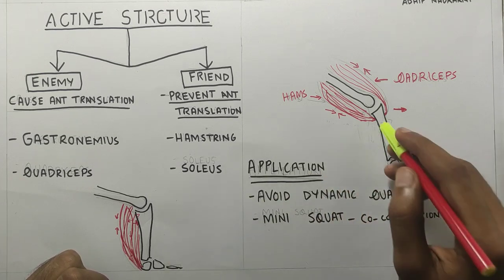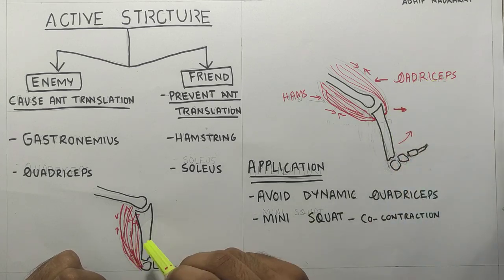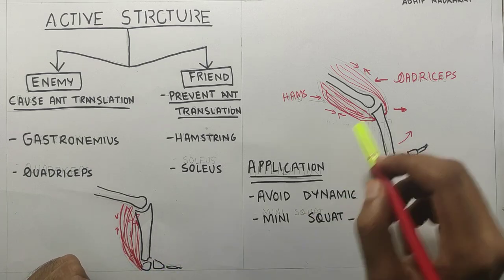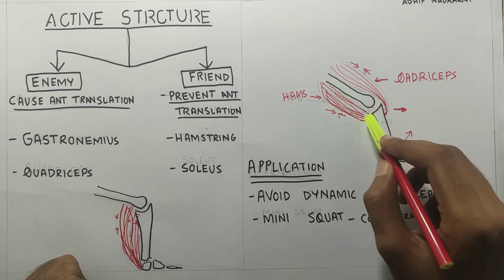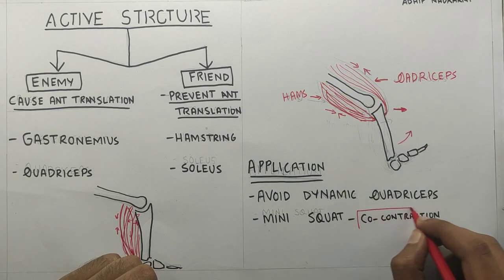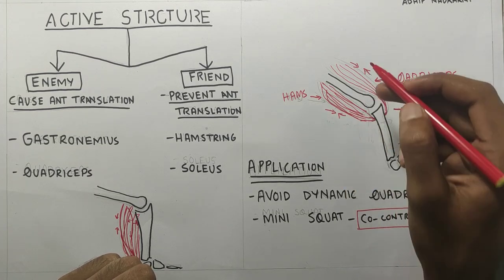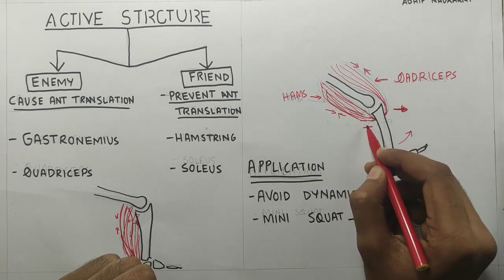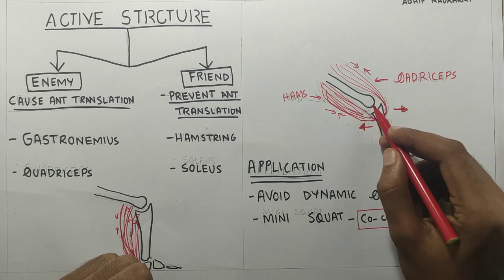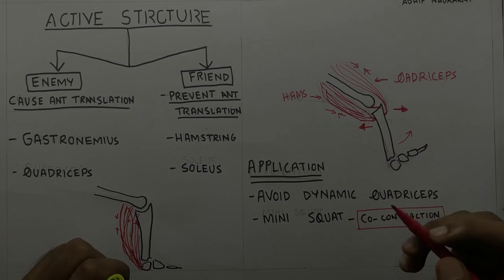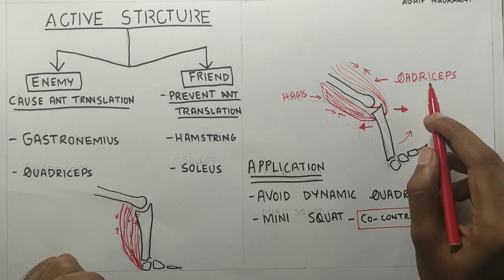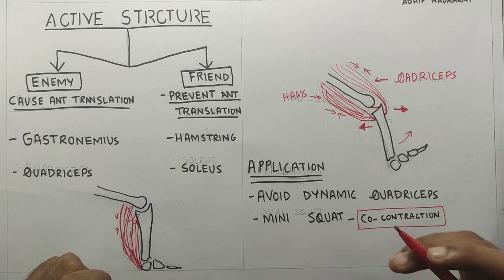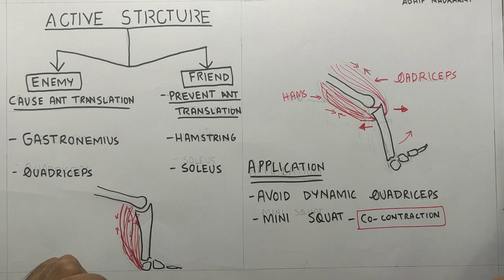Why is this? In both exercises there is quadriceps activity, but in mini squats the patient is in a closed kinematic chain — in contact with the ground. Hence along with the quadriceps, the hamstrings will also be working. This is called co-contraction. When quadriceps and hamstrings work together, quadriceps will cause anterior translation while hamstrings will cause posterior translation of the tibia — hence the ACL will not be strained as much. This is a good exercise to strengthen both quadriceps and hamstrings, and since the patient is weight bearing it is overall a really good exercise to start with in the rehab process.